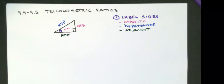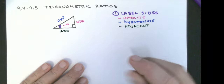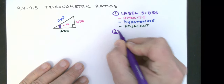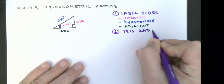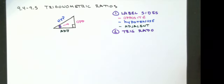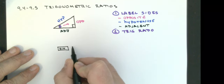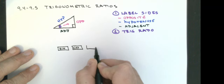After labeling the sides, we pick a trig ratio. This is where some memorization comes into play. On your calculator you have three trig buttons: sine, cosine, and tangent.